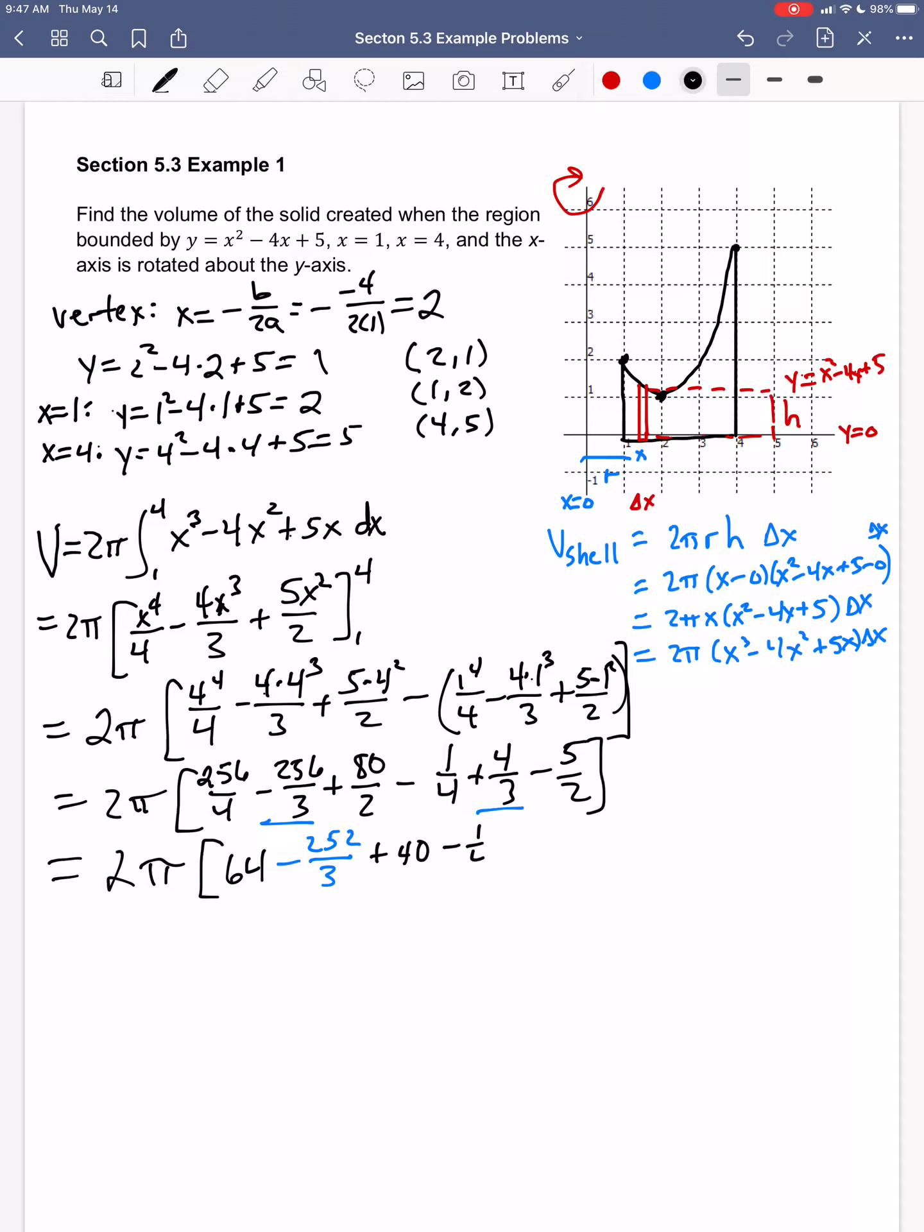Minus 1 fourth and minus 5 halves. 252 is divisible by 3, so we get 84. Here we have a common denominator, minus 1 fourth and then minus 10 fourths instead of 5 halves. So negative 11 fourths plus 40, we get 20 minus 11 fourths.